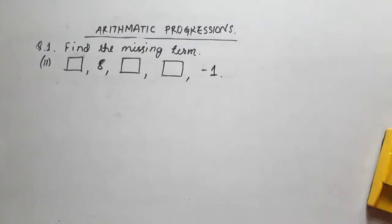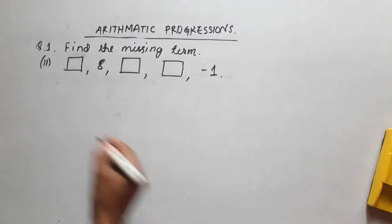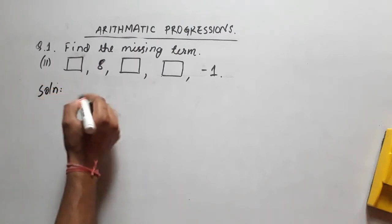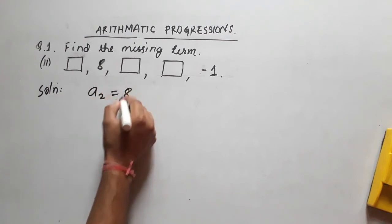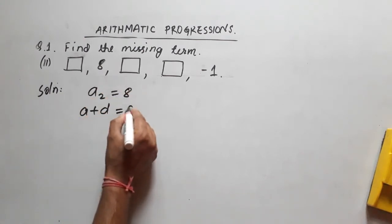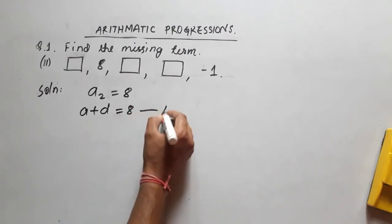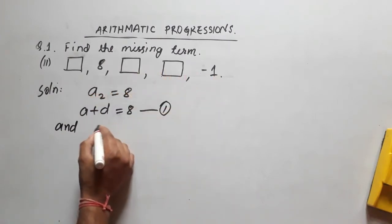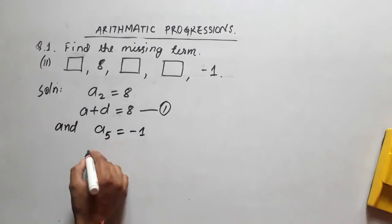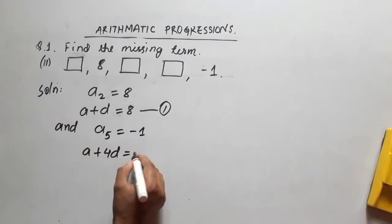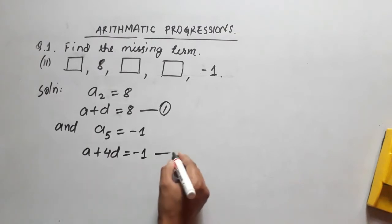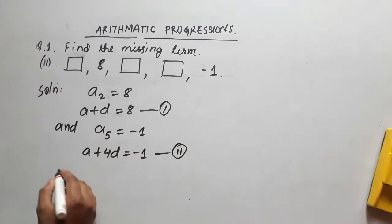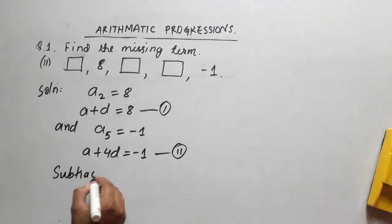Next question: the first term is missing, the second term is 8, the third and fourth terms are missing, and the fifth term is minus 1. So we set up two equations. From a2: a plus d equals 8 — this is equation 1. From a5: a plus 4d equals minus 1 — this is equation 2.